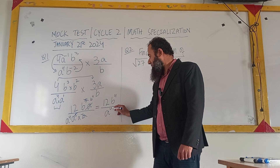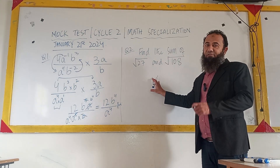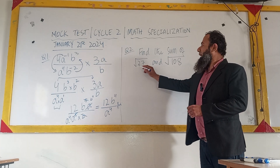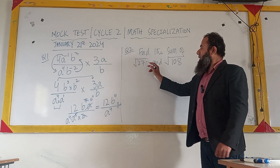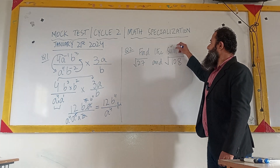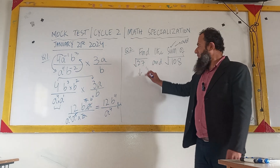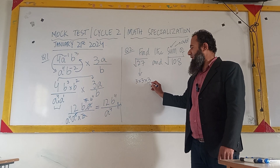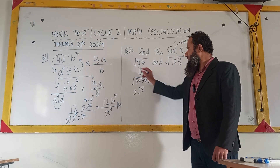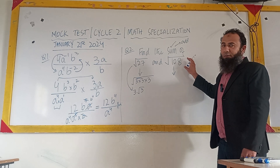I have selected questions that are very similar to each other to create consistency. In question number 2, we have the square root of 27 plus the square root of 108, and we need to find their sum. First, we find all the factors of 27: 27 equals 3 times 3 times 3. Since it is under a square root, we make one pair that comes out, giving the simplest form of √27 as 3√3.